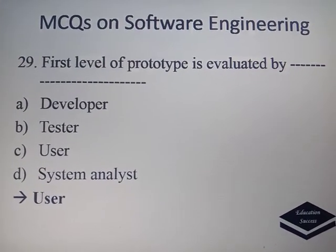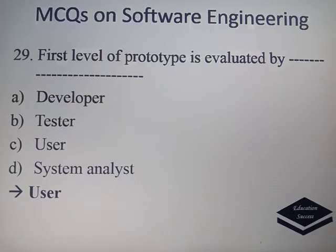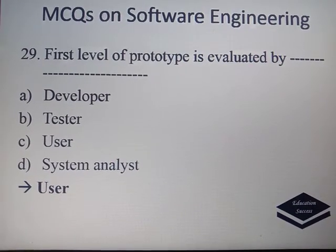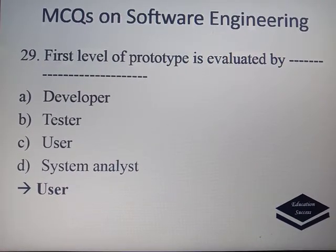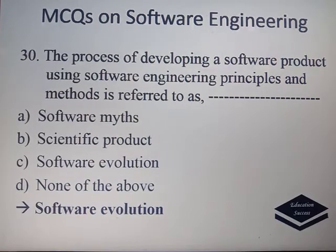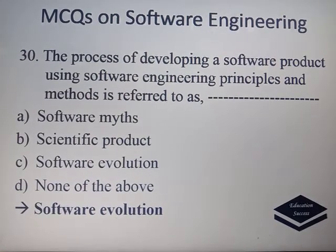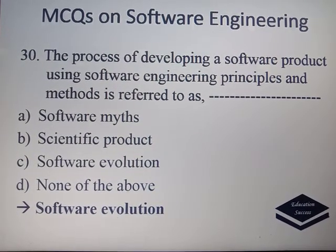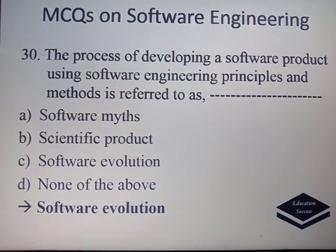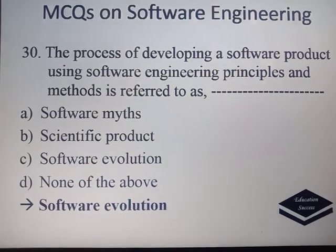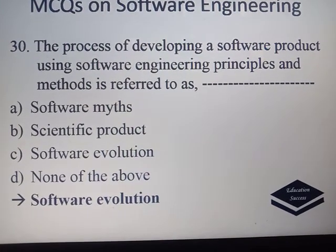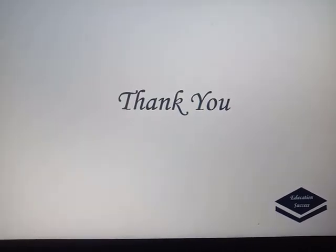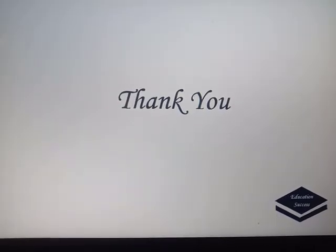The first level of prototype is evaluated by the user, so the correct answer is C. The process of developing a software product using software engineering principles and methods is referred to as software evolution. Thank you.